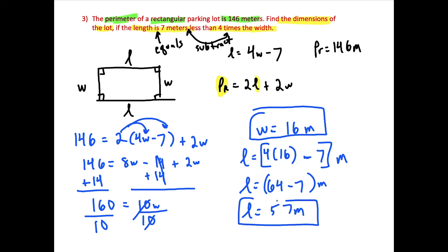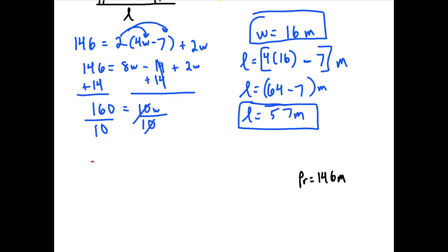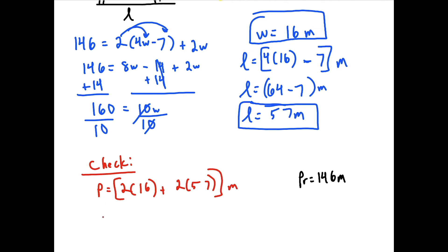To check, we plug the values back into the perimeter formula: 2 times 16 plus 2 times 57 equals 32 plus 114, which equals 146 meters. This confirms the answer is correct.